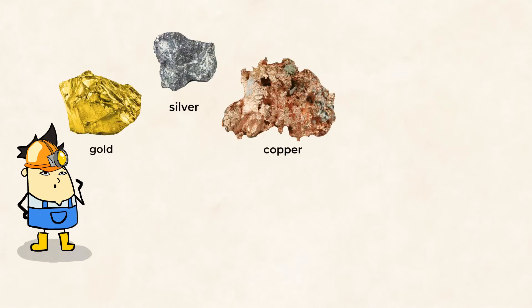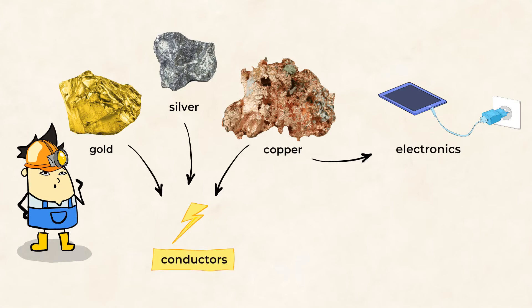Other metals like gold, silver, and copper are used in a lot of the electronics that we use. Metals like these are good conductors, which means that electricity can move through them easily. This makes metals perfect for things like televisions and radios.